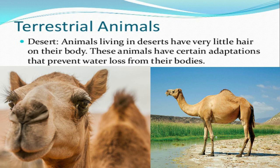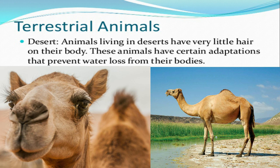In deserts, which are very hot and dry places where water is very less, animals like camels and desert rats are found. They have very thick skin with very little hair on their body – because hair prevents water loss. They have very broad, flat, and padded soles on their legs which help them to move on sand. They also have long eyelashes which protect their eyes from sandstorms and sunlight.